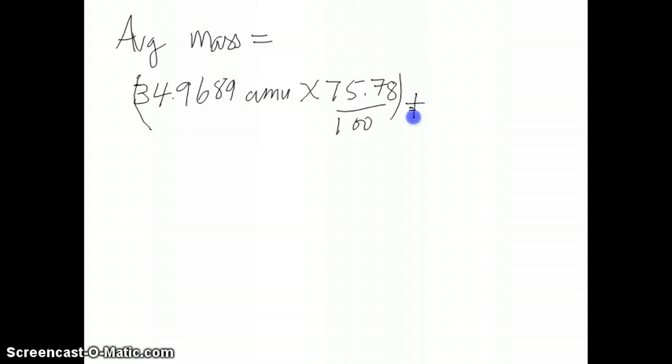And then the second one, of course, is the second isotope, which is chlorine-37. And that has an actual mass of 36.9659. I'm going to skip the amu here just so that I have enough space. Multiply that by your percent abundance for that isotope, which is 24.22. And, of course, this is percent, so it's over 100.